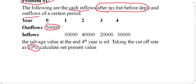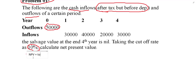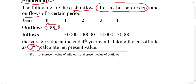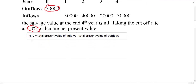So how can we find out the NPV? If you remember, previously we mentioned the formula: NPV is equal to total present value of inflows minus total present value of outflows. So first we have to find out the total present value of inflows, then find out the total present value of outflows, and from inflow minus outflow we will get the NPV.